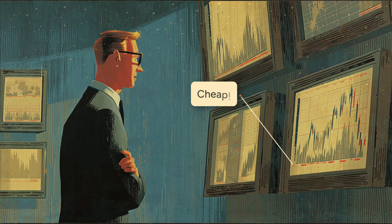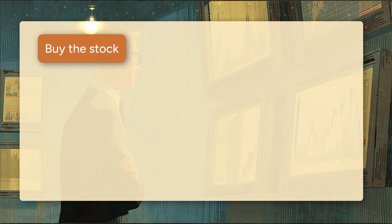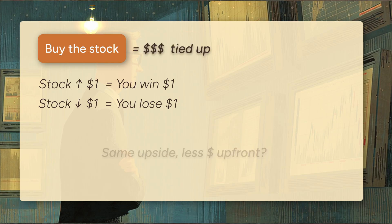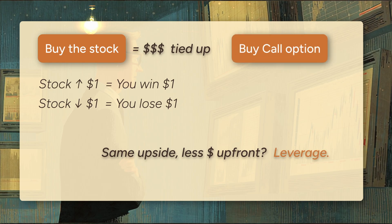This stock looks cheap, undervalued even. Your model confirms it, the signal is clear, it's time to act. You could buy the stock. If it goes up $1, you make $1. If it falls $1, you lose $1. A direct, one-to-one relationship, but buying 100 shares ties up a lot of capital. You want the same potential upside with less money up front. In other words, you want leverage. So you buy a call option instead.